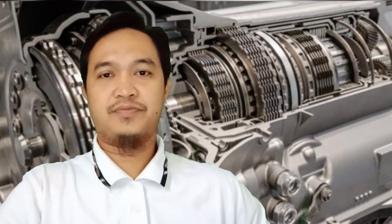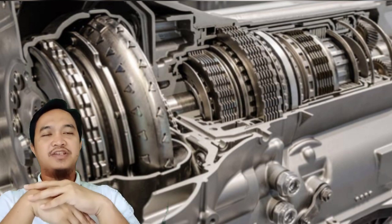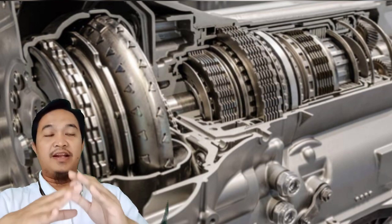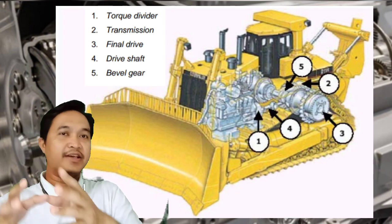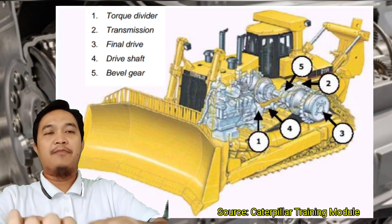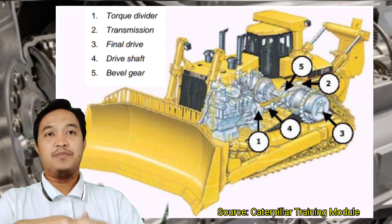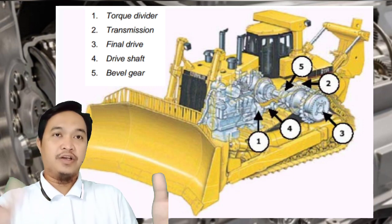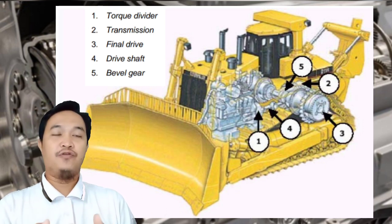Kita langsung masuk ke powertrain system. Powertrain system adalah satu sistem kerja dari beberapa komponen yang tujuannya adalah mentransfer tenaga dari engine sampai ke penggerak akhir dan sampai ke roda atau wheel, atau bisa juga track kalau di tipe doser atau excavator. Powertrain terdiri dari beberapa komponen, di antaranya torque converter, transmisi, differential, dan final drive.